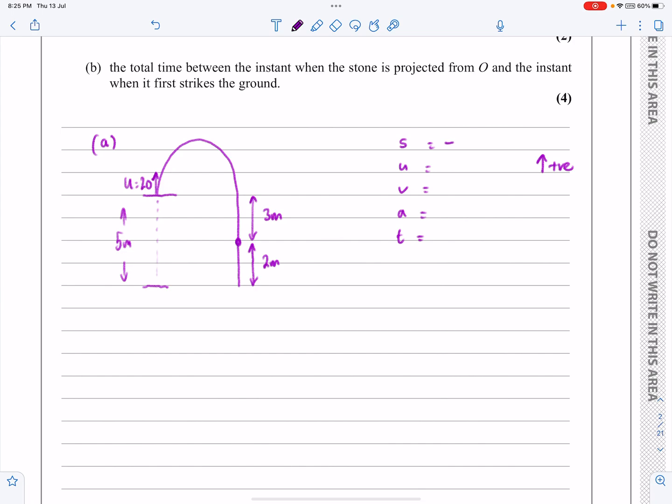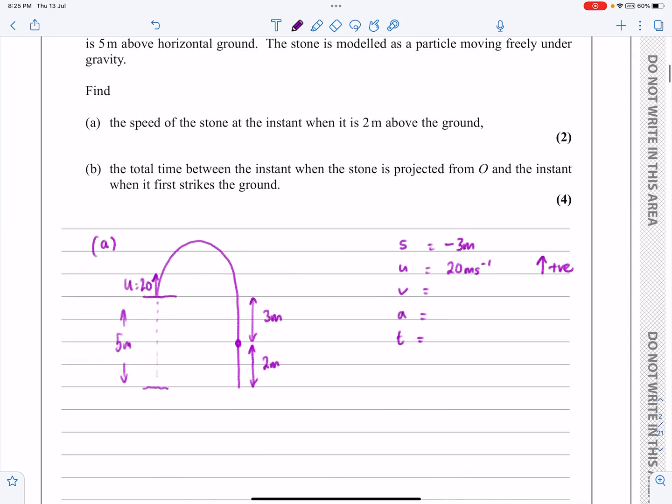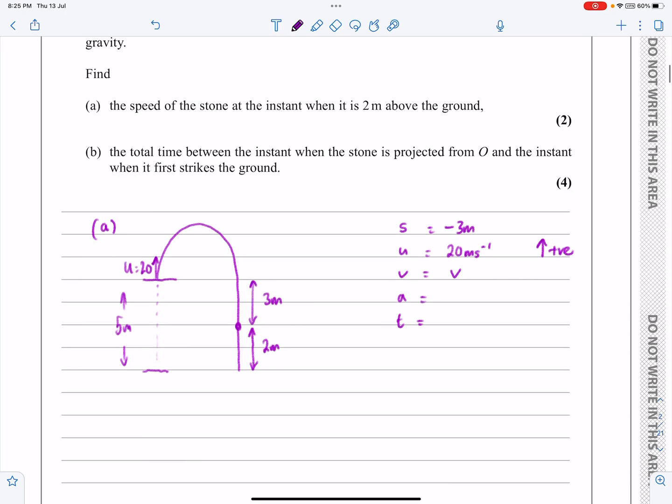So from there to there, what do I have? S is going to be minus 3 metres, then if I take upwards as being positive, it's ended up 3 metres below where it started off from. But it started with a speed of 20, and 20 being plus 20 because it was thrown upwards. What do they want? They want the speed of the stone at that stage. So V is what I'm looking for. Acceleration is minus g or minus 9.8, whichever you prefer to write down.